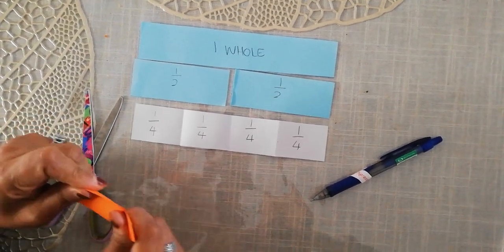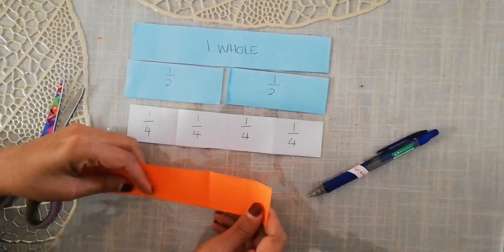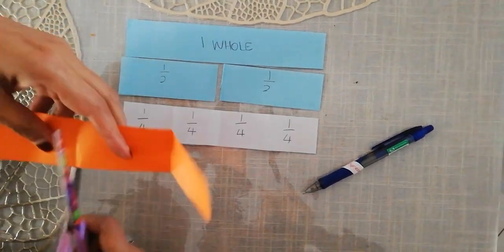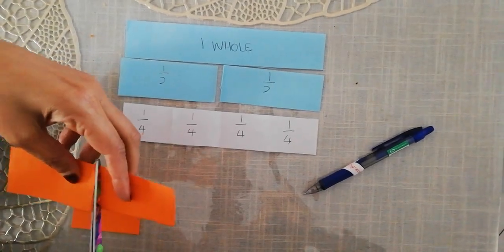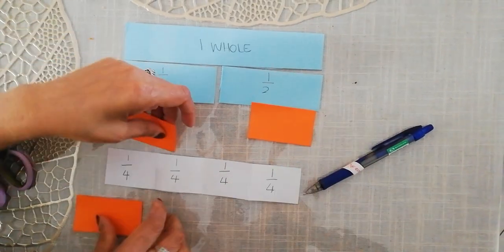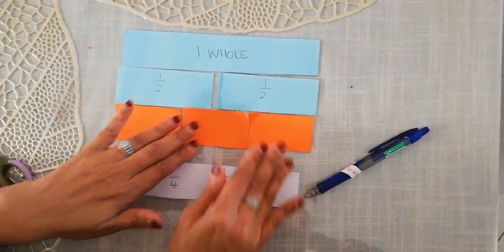If you had a bit of a problem with this, and it didn't come out exactly, don't stress, because it's still going to show you your three parts. It's still going to show you that the paper, one whole, is made up of one third, one third, and another one third.